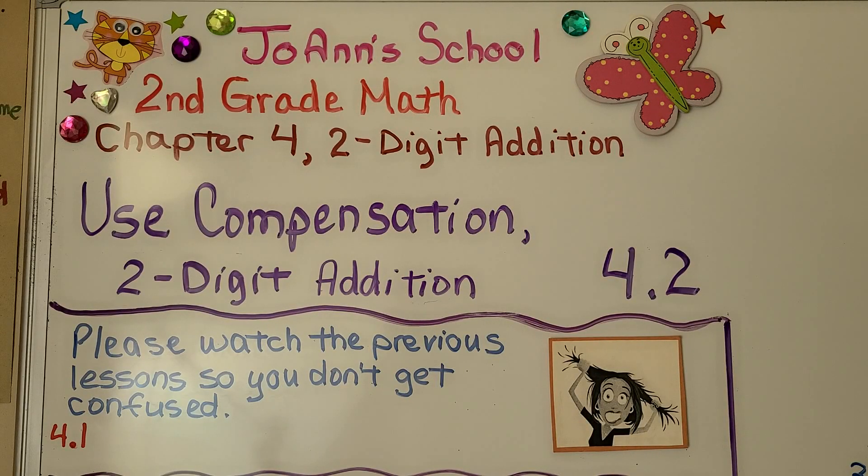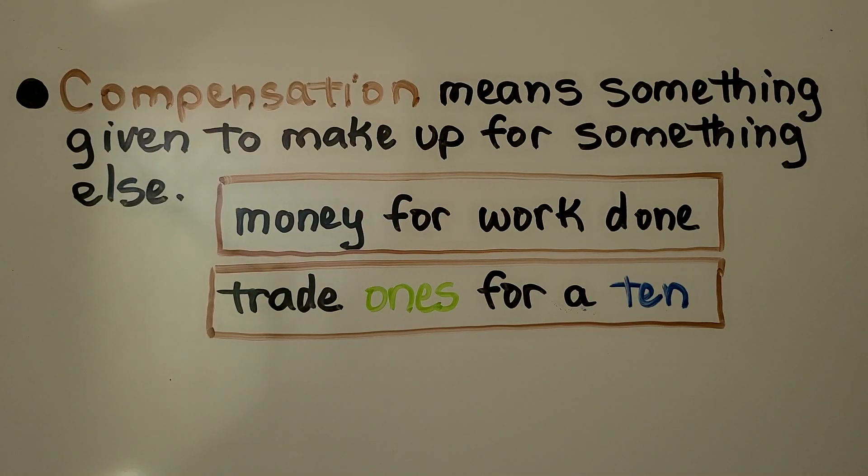Lesson 4.2: Use Compensation. This is for two-digit addition. Compensation means something given to make up for something else. Money could be given to make up for work that was done, or compensation could be we trade ones to make a ten.